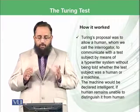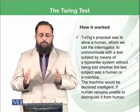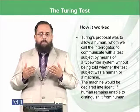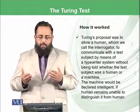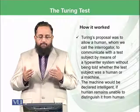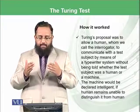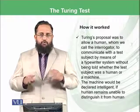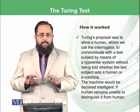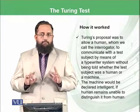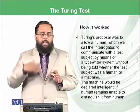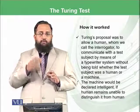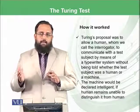How did it work? The Turing proposal was to allow a human, whom we can call the interrogator, to communicate with the test subject by means of a typewriter. The human is sitting and writing commands, and on the other end there could be a human or there could be an intelligent agent.